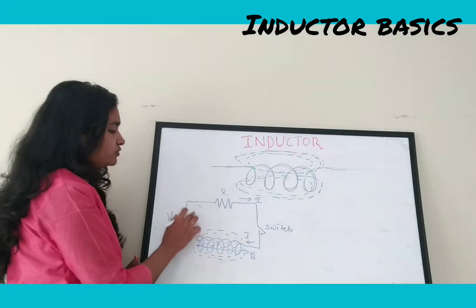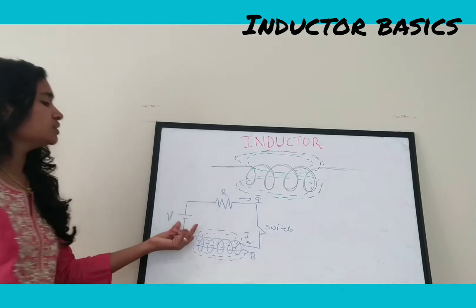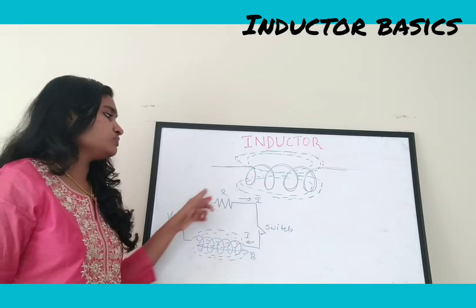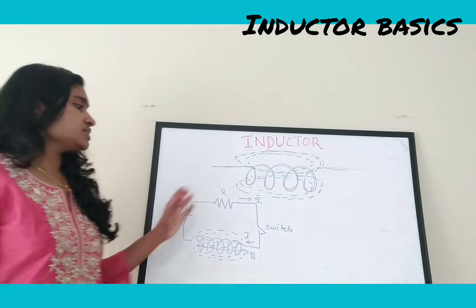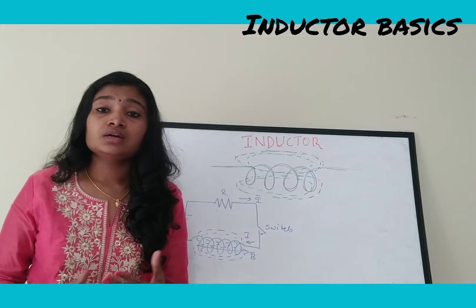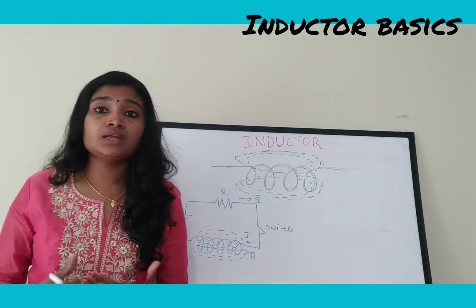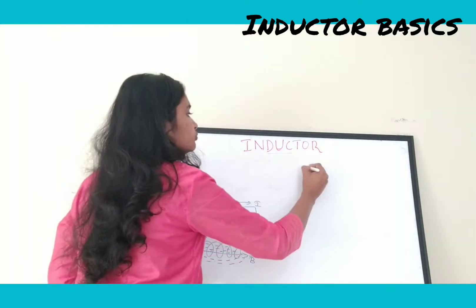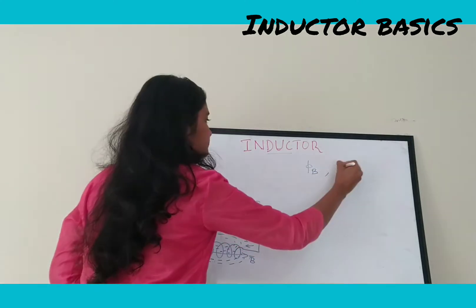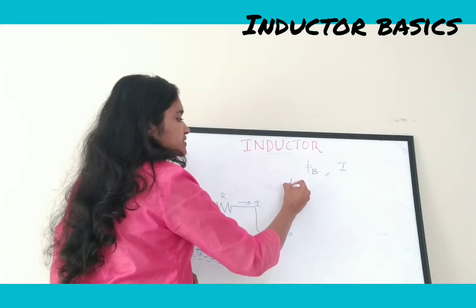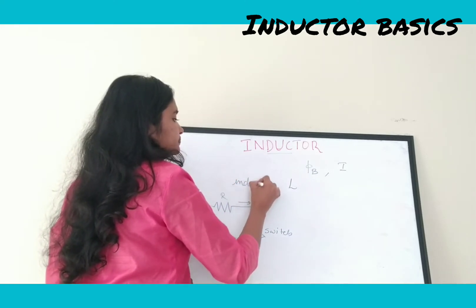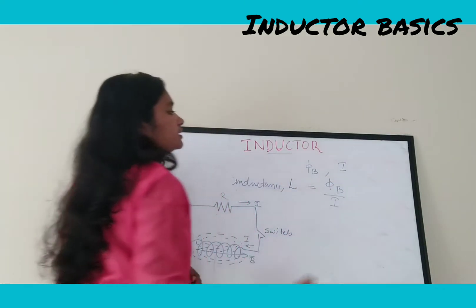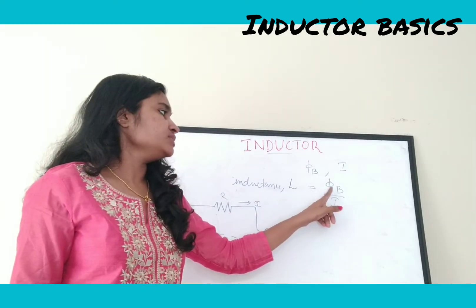This EMF is in the opposite direction to the battery voltage — the inductor generates an EMF opposing the source voltage. This is the working principle of an inductor. Let the magnetic flux linkage around the coil be Φ_B and the current be I. The inductance is denoted by L, where L = Φ_B / I — that is, the ratio of magnetic flux linkage to current.